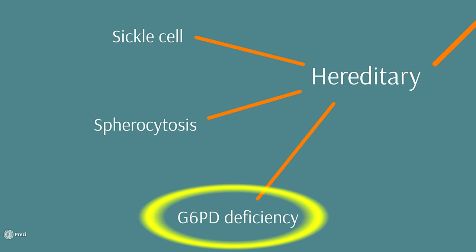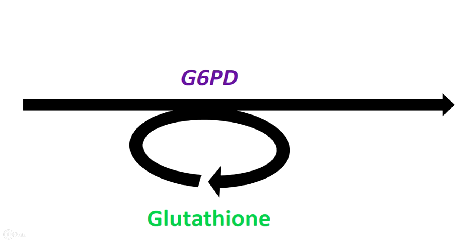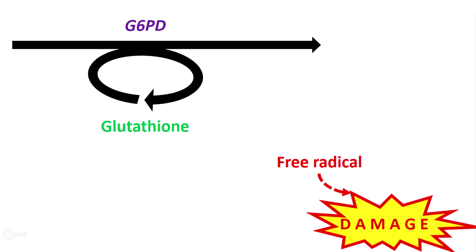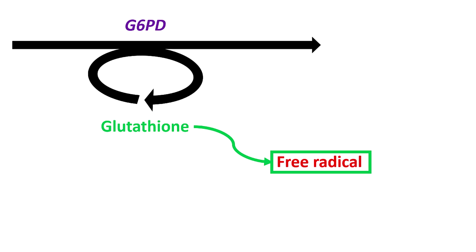G6PD deficiency or to give it its full name glucose-6-phosphate dehydrogenase deficiency is one of those things that sounds really complicated and it puts people off but actually it's not too bad and we'll take it step by step. Basically G6PD is an enzyme which recycles glutathione. Glutathione is important because it's an important intracellular antioxidant. If you can't remember your cell science, basically antioxidants are things that soak up free radicals and free radicals basically bond to things and cause damage so it's obviously a good thing to have more glutathione around.